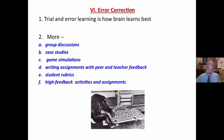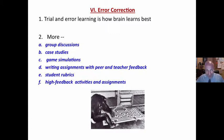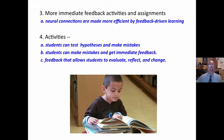We need more time simply messing around. Trial and error learning activities activate more emotional structures within the brain. So: more group discussions, case studies, game simulations, writing assignments with peer and teacher feedback — that's error correction. Student rubrics where they create the rubrics and check their own assignments. High feedback activities and assignments.